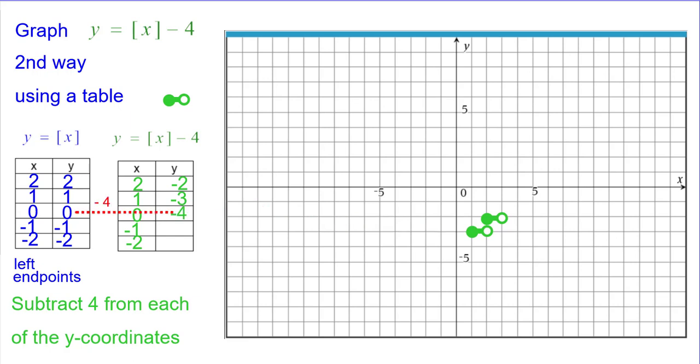0 minus 4 is -4, so (0, -4). -1 minus 4 is -5, so (-1, -5). And -2 minus 4 is -6, so (-2, -6).